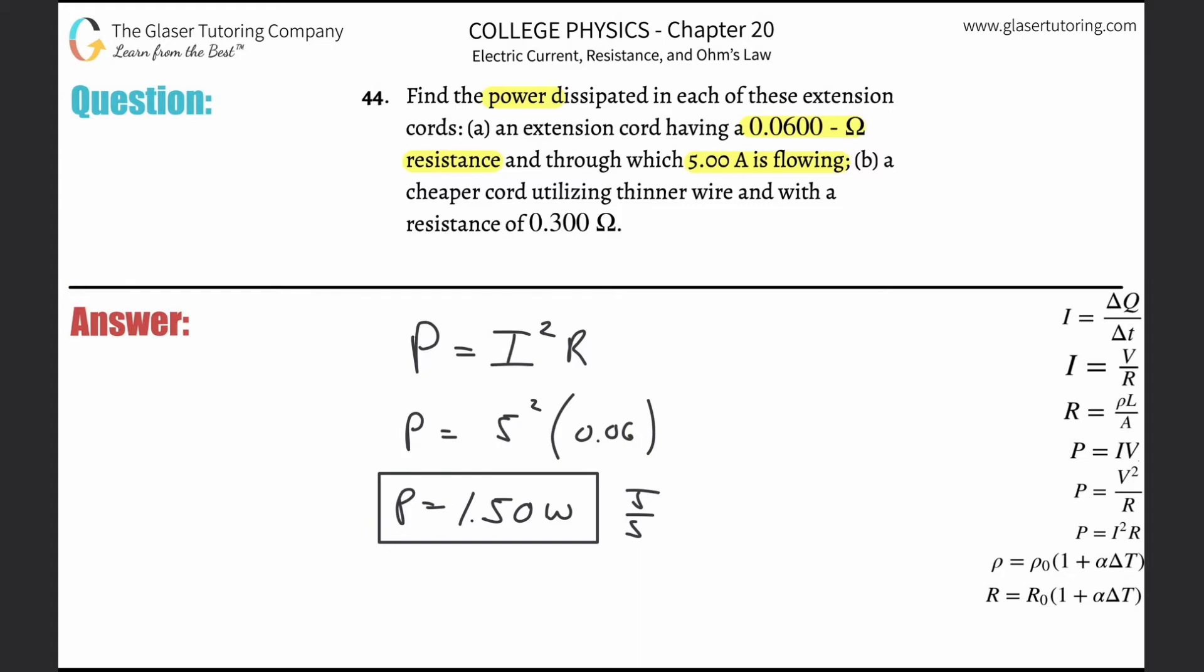Power then for letter B: It says a cheaper cord - don't go with the cheaper option - a cheaper cord utilizing thinner wire and with a resistance of 0.3 ohms.